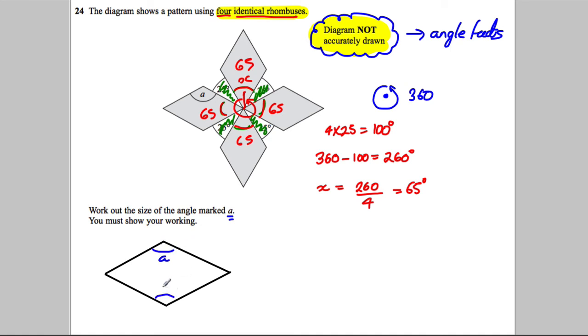Now a rhombus would have this angle here also equal to a. We found out that this is 65, so this must be also equal to 65. If we add all these angles together, it's inside the quadrilateral, it must add to 360.